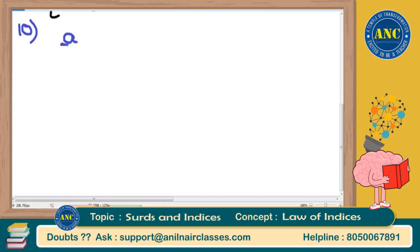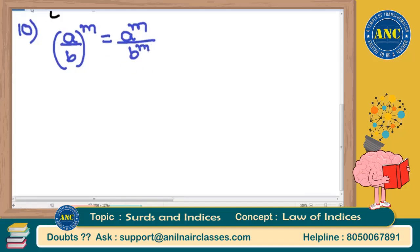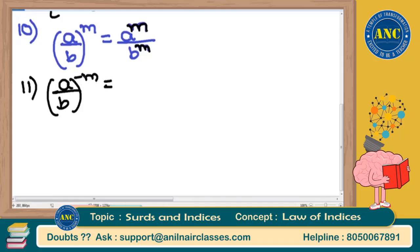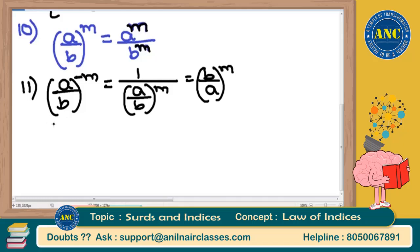Now let us keep the powers the same but have different bases: a^m ÷ b^m. Here the bases are different but the powers are equal — we write this as (a/b)^m. Additionally, (a/b)^(−m) equals 1/(a/b)^m, which equals (b/a)^m. A negative power means taking the reciprocal.